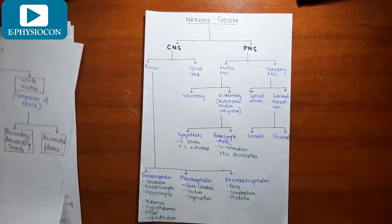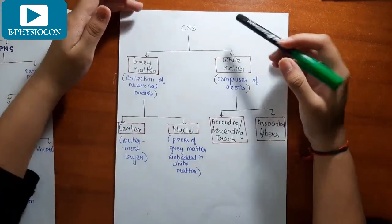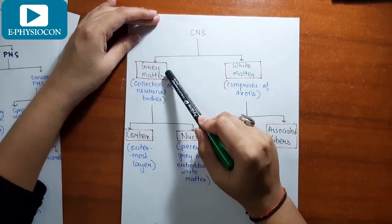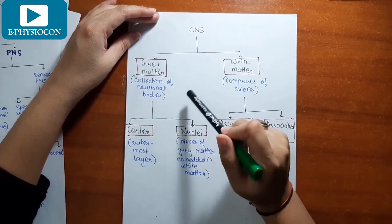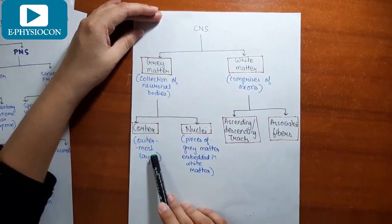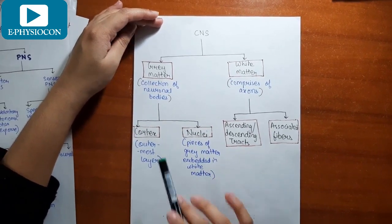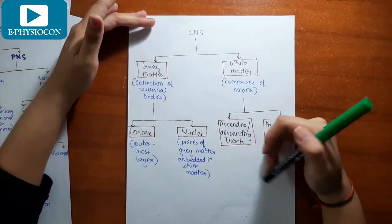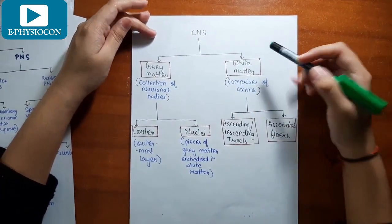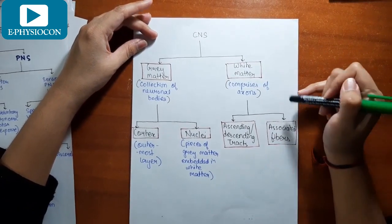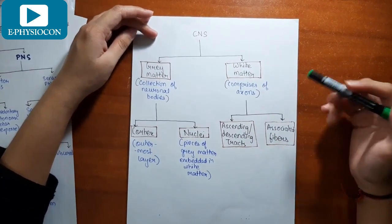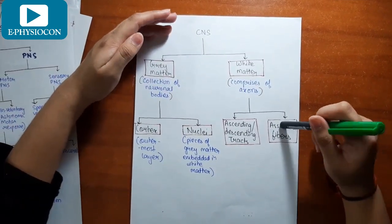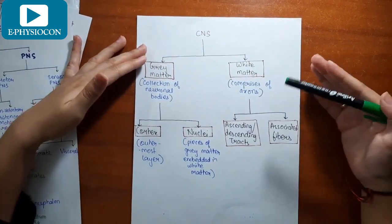Moving towards the central nervous system, it consists of grey matter and white matter. The grey matter, or collection of neuronal bodies, is divided into the cortex and nuclei. The cortex is the outermost layer and nuclei are pieces of grey matter embedded in white matter. The white matter comprises axons, which are further divided into ascending tracts, descending tracts, association fibers, and commissural fibers.